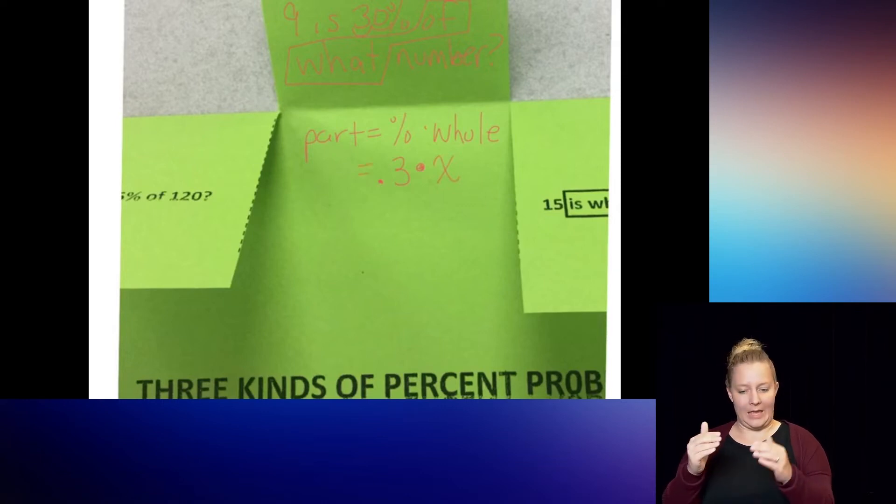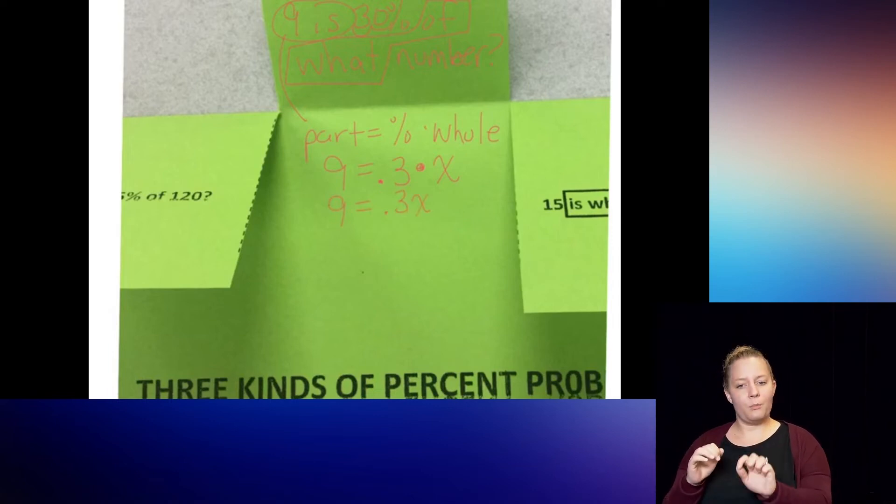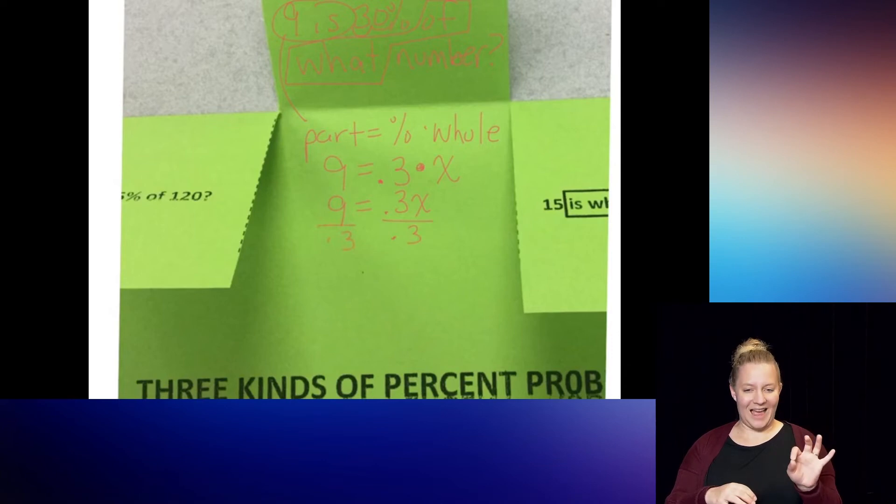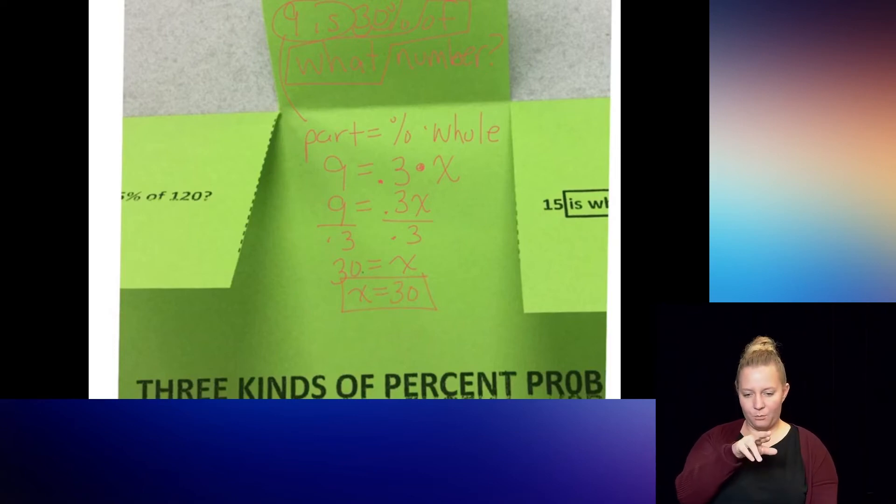Bring down my equal sign right beneath where it was. And the part is nine because it has that word is with it. So I have nine equals point three times x. Well, do you remember what point three times x is? Anytime you have a number times a variable, you just hook them together. So it's actually point three x. But we're trying to figure out what the x equals. So right now the x is being multiplied by the three tenths decimal. So to get rid of it, I divide by that three tenths decimal. And so the nine divided by point three on my calculator gives me 30. And then to make my final answer, I just always put the variable on the left. So x equals 30, just like when you worked it out in this one from the proportion method.